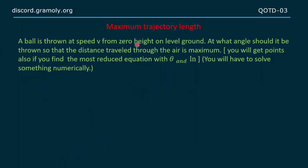The problem states that a ball is thrown at speed v from zero height on level ground. At what angle should it be thrown so that the distance traveled through the air is maximum? In short, we have to find the maximum trajectory possible at an angle.